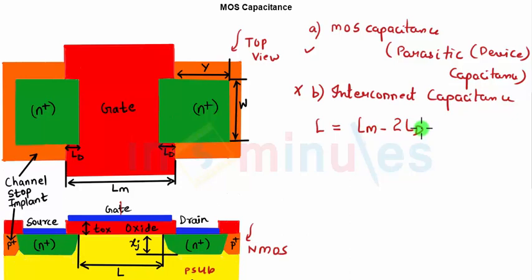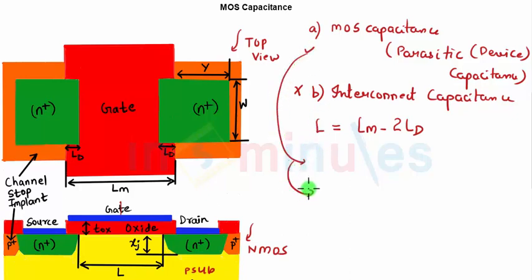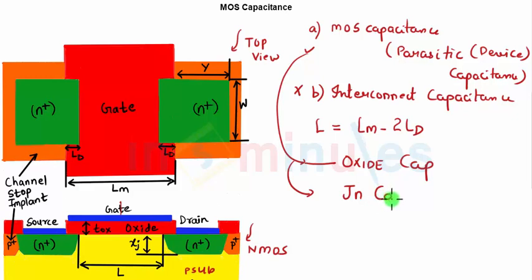Parasitic capacitances in a MOSFET are classified into two types: oxide capacitance and junction capacitance. In this clip we will study oxide capacitance in detail, and in the next clip we will study junction capacitance.